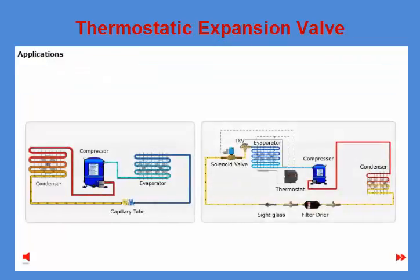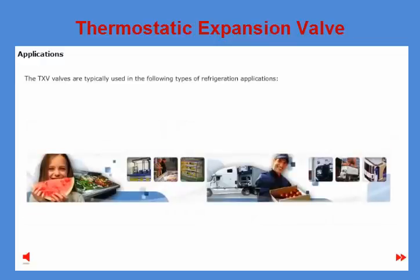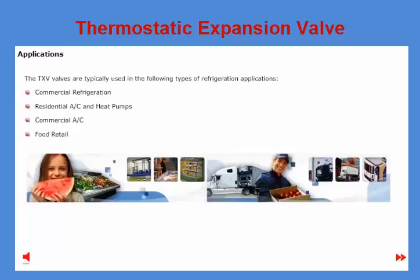A throttling device is necessary in all refrigeration applications. In the most basic systems with little demand for optimization, a capillary tube may be used. However, as soon as optimization of energy or function is necessary, a thermostatic expansion valve (TXV) is used. These valves are typically used in a wide range of refrigeration applications, divided into the following groups: commercial refrigeration, residential AC and heat pumps, commercial AC, and food retail.